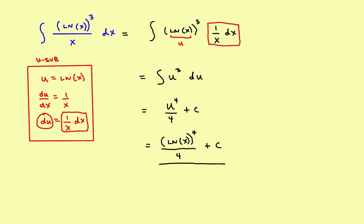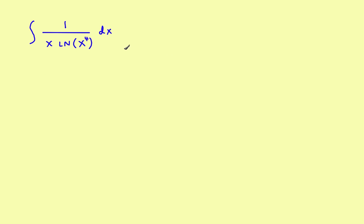Now let's compare that to the next problem. This one also involves a natural log of x, but let's run through the choices of u again. Suppose you let u equal x — the trouble is the derivative of x will not get you to the natural log of x, so that would be a poor choice. The other possibility is to let u equal the natural log of x. Its derivative gives 1 over x, so that would be a good choice. We'll let u equal the natural log of x, but we've got a little more algebra to do first.